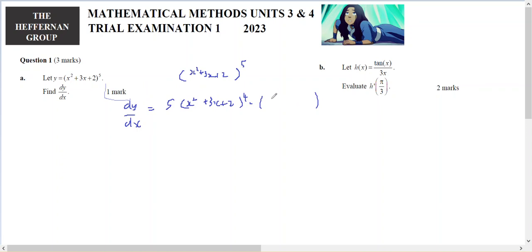The derivative of the inside is x squared becomes 2x, and the plus 3x becomes plus 3. And there is your final answer.